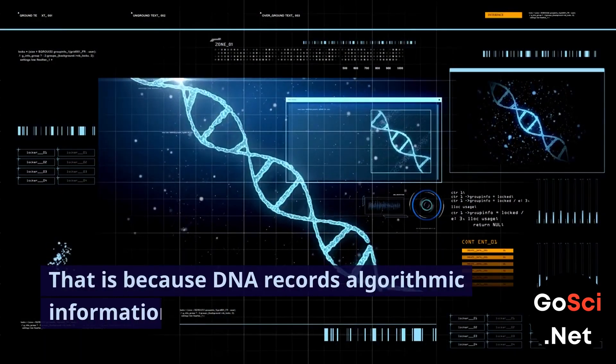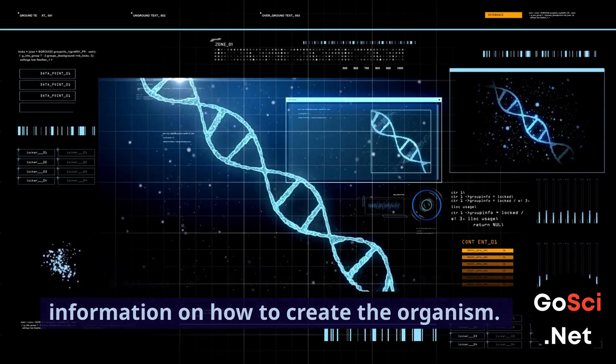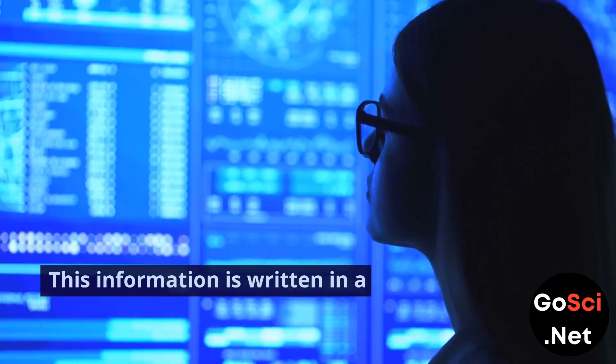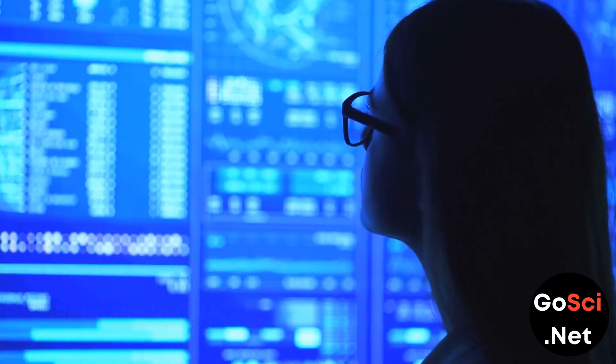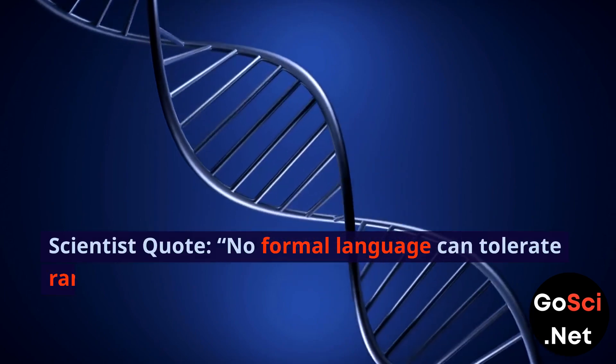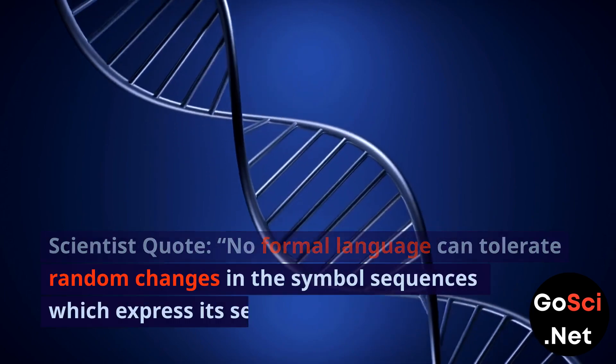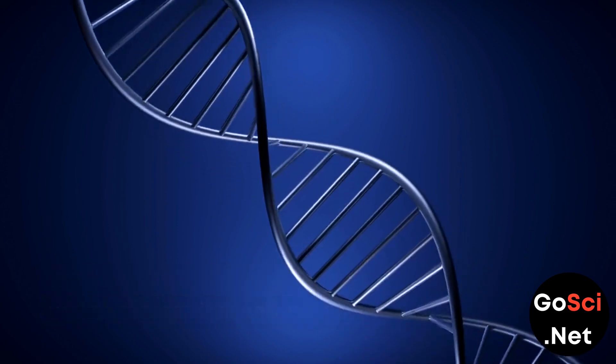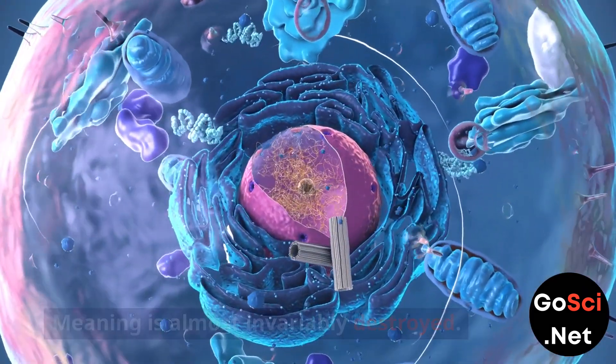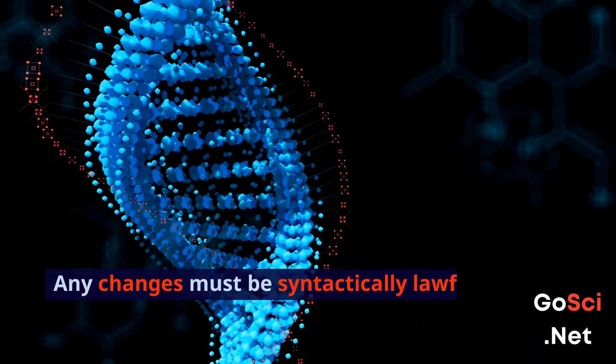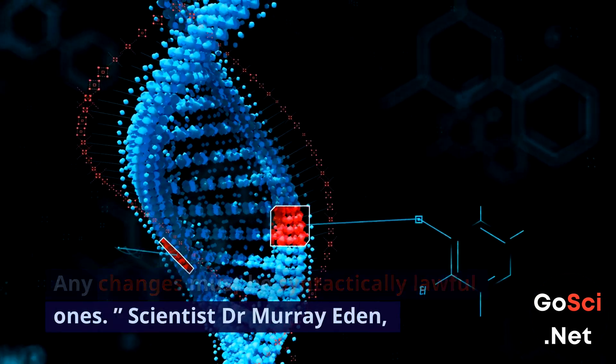That is because DNA records algorithmic information on how to create the organism. This information is written in a formal language in DNA. Scientist, quote: No formal language can tolerate random changes in the symbol sequences which express its sentences. Meaning is almost invariably destroyed. Any changes must be syntactically lawful ones.